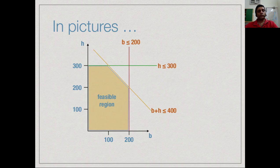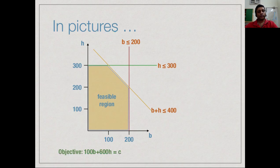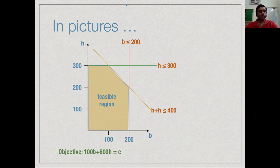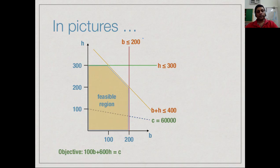Now we have to introduce our profit function. Our objective is 100b plus 600h and depending on what values of b and h we choose, this will be equal to some c. We can examine what this looks like for different values of c. For example, if we set our profit to be 60,000, then any quantity along this line, any value of b and h which is inside the orange feasible region will give us 60,000. All these points give us 100b plus 600h equal to 60,000.